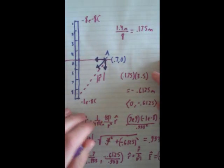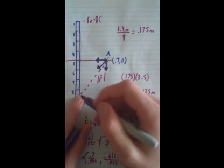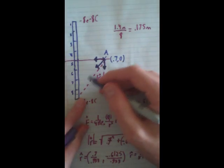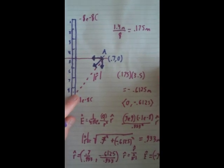So our net E field will be this. And this makes sense, because this is negatively charged, and the E field always points towards the negative, so it makes sense that that's what it'll look like. So that's how you do a problem like that.